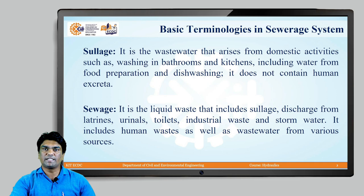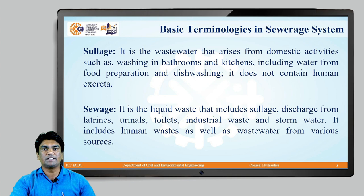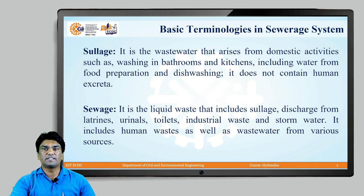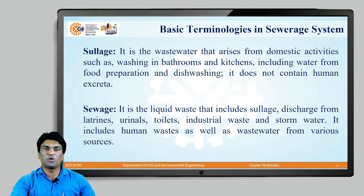We will discuss some basic terminologies used in the sewerage system. Two important terms are Sullage and Sewage. Sullage is the wastewater that arises from domestic activities which includes washing in bathrooms and kitchens, including water from food preparations and dish washing, but it does not contain human excreta. Whereas sewage is the liquid waste that includes sullage, discharge from latrines, urinals, toilets, industrial waste, as well as storm water. It includes human excreta as well as wastewater from various sources.